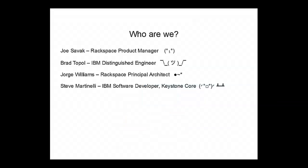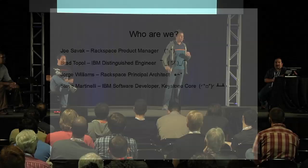So who are we? My name is Joe Savick, I'm Rackspace Identity Product Manager. We have Brad Topol, IBM Distinguished Engineer; Jorge Williams, Principal Architect with Rackspace; and Steve Martinelli, Keystone Core IBM Software Developer. There are a lot of other core software developers for Keystone in the room — can you raise your hand? Thank you very much.